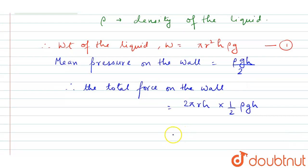So now this one will be equal to π r h² ρ g. Name this equation as equation 2.